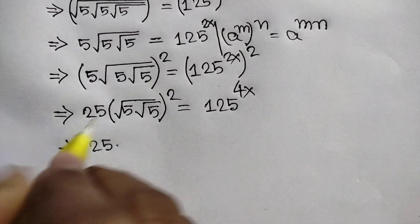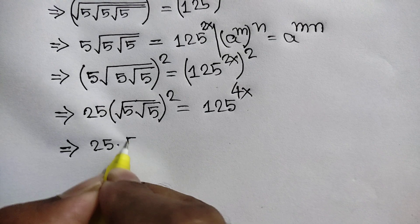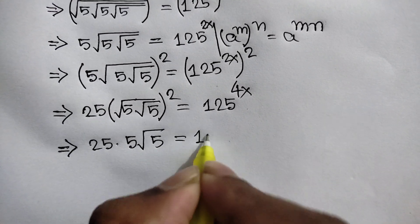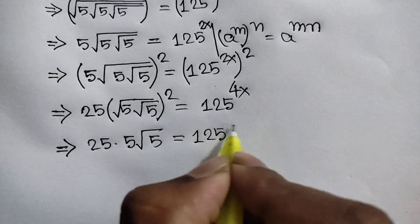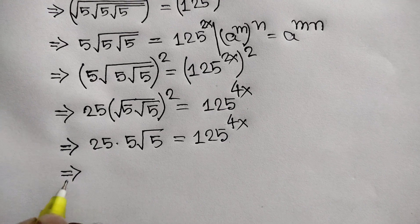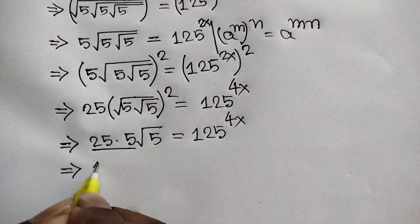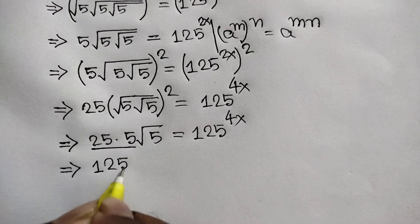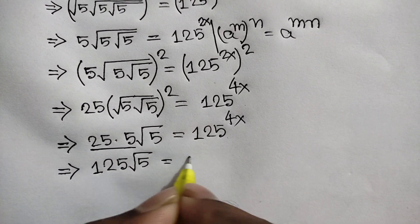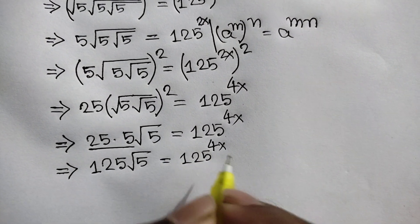So we get 25 times 5, which is 125. Therefore 125 times square root of 5 is equal to 125 to the power 4x.